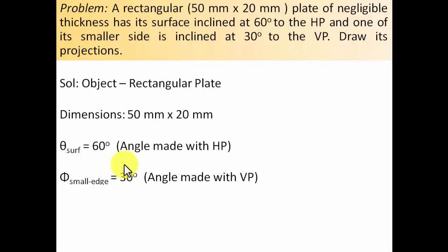I've divided the solution into two parts. Part one is a demonstration of how the object is kept with reference to HP and VP — what the initial assumption is, and how to draw the front and top views initially. Part two will implement everything we see in part one.